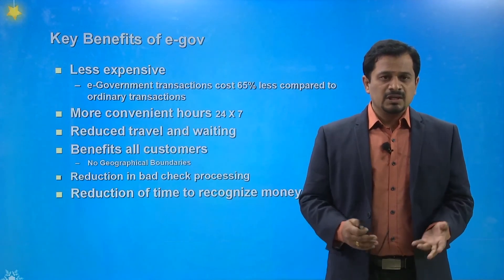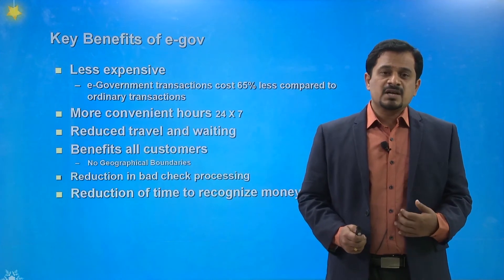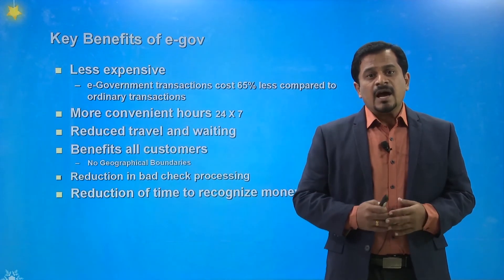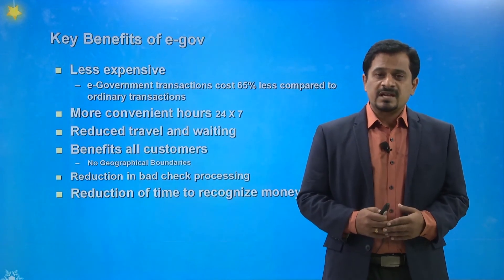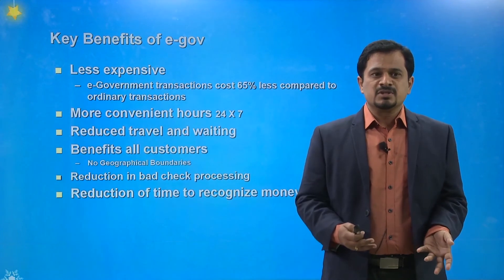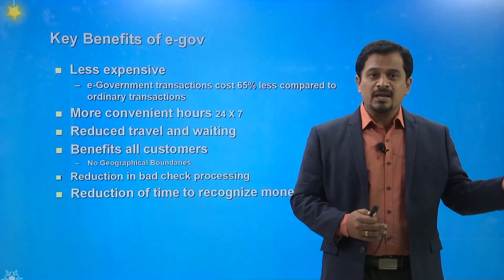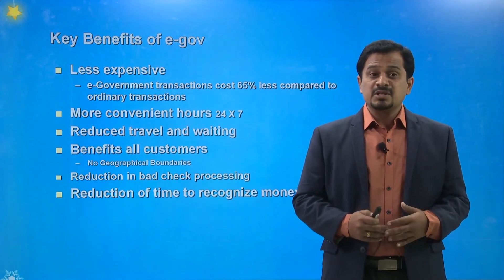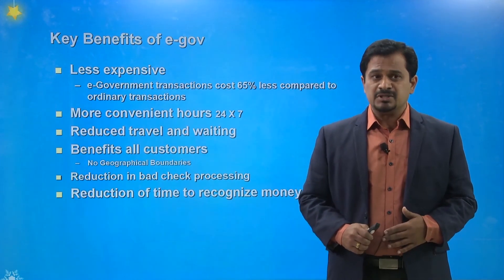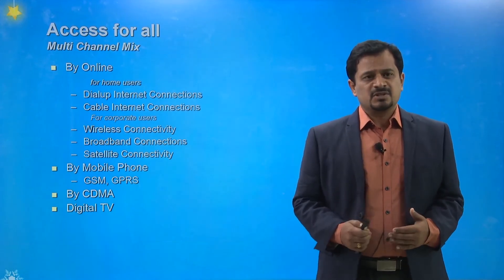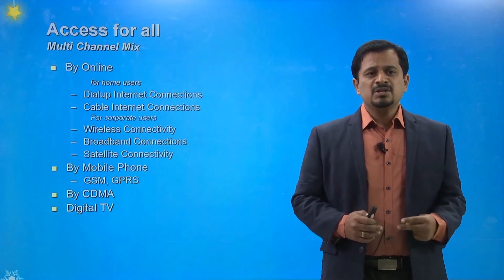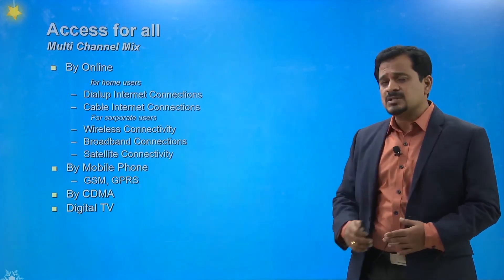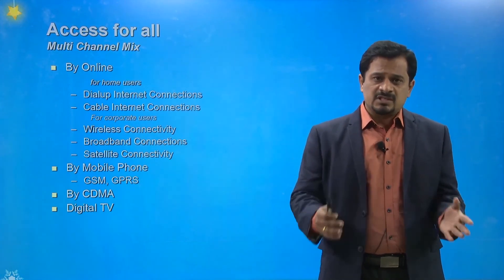The key benefits of e-government: it is much less expensive compared to conventional government — e-government reduces transaction cost by around 65%. It works 365 days and 24/7, reducing travel and waiting time. There are no geographical boundaries, and citizens anywhere can get all benefits. It also allows reduction in bad check processing and reduction of time to recognize payments. E-government facilities can be accessed online, via mobile phones, CDMA, and digital TVs.